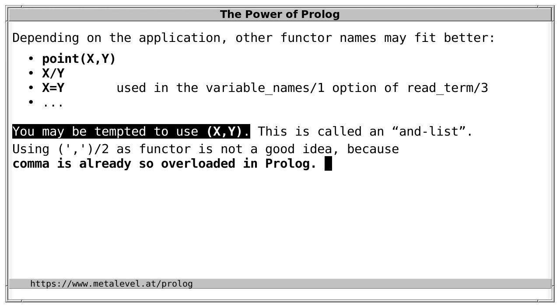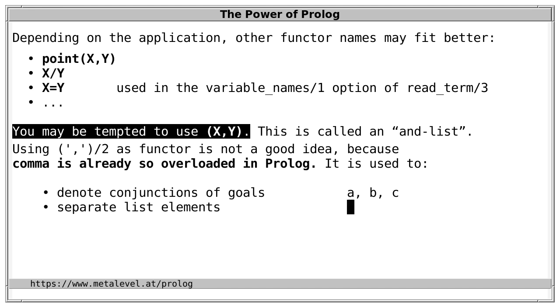However, using comma as a functor is not a good idea because comma is already very overloaded in Prolog. Namely, it's used to, first, as already mentioned, denote conjunction as in A, B, C in a rule body.